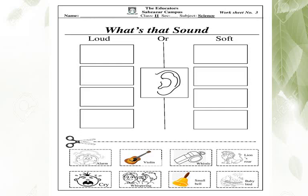There are 4 boxes in each row, and 8 boxes with pictures in this worksheet. We will see what type of sound the things in each picture make. The first picture is an alarm — it makes a loud sound. Next is a violin — it produces a very soft sound. Next is a whistle — it makes a very loud sound. The last picture is a lion — it makes a very loud sound, called a lion's roar.